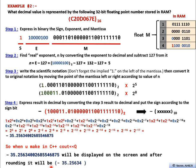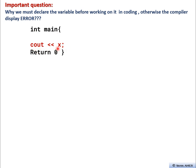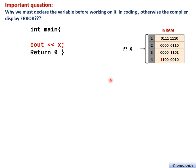Now let's discuss why we must declare the variable type before working with it in programming. For example, in C++, if we just write 'cout << X' without declaring X, the compiler gives an error saying X is undefined. We must determine what X is — its type — before using it.